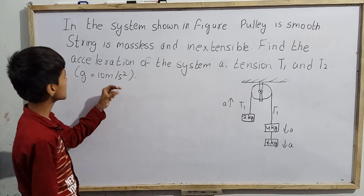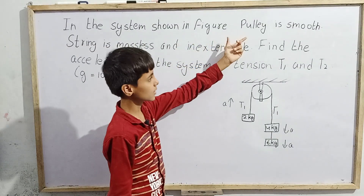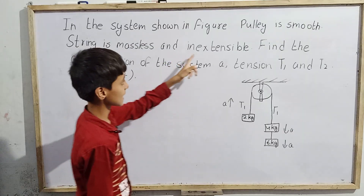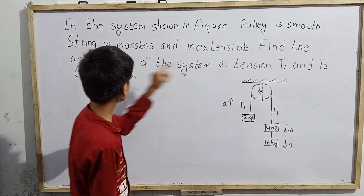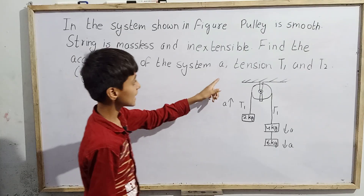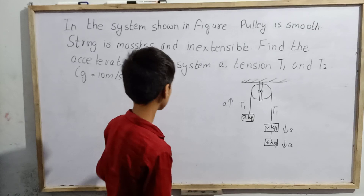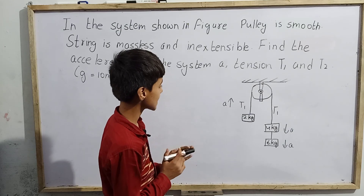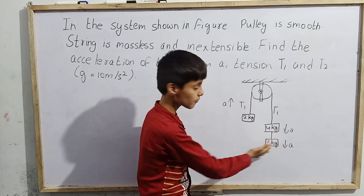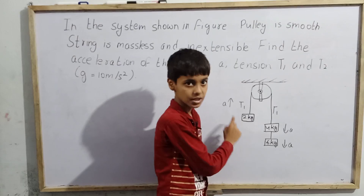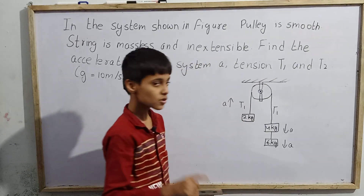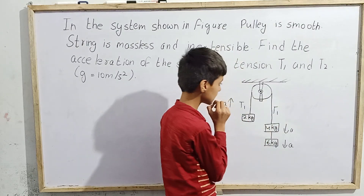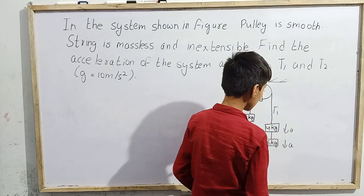Our question is: in the system shown in the figure, the pulley is smooth, the string is massless and inextensible. We need to find the acceleration of the system, tension T1 and T2, given g equals 10 meters per second square. We have a pulley system with blocks of certain masses, and we let the acceleration be a.